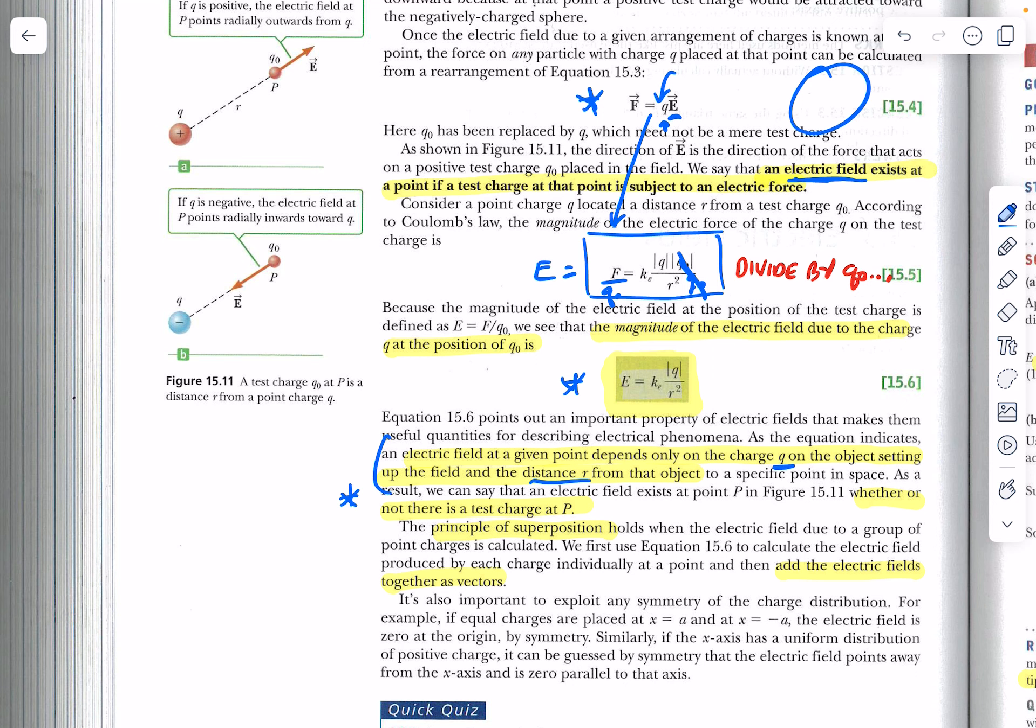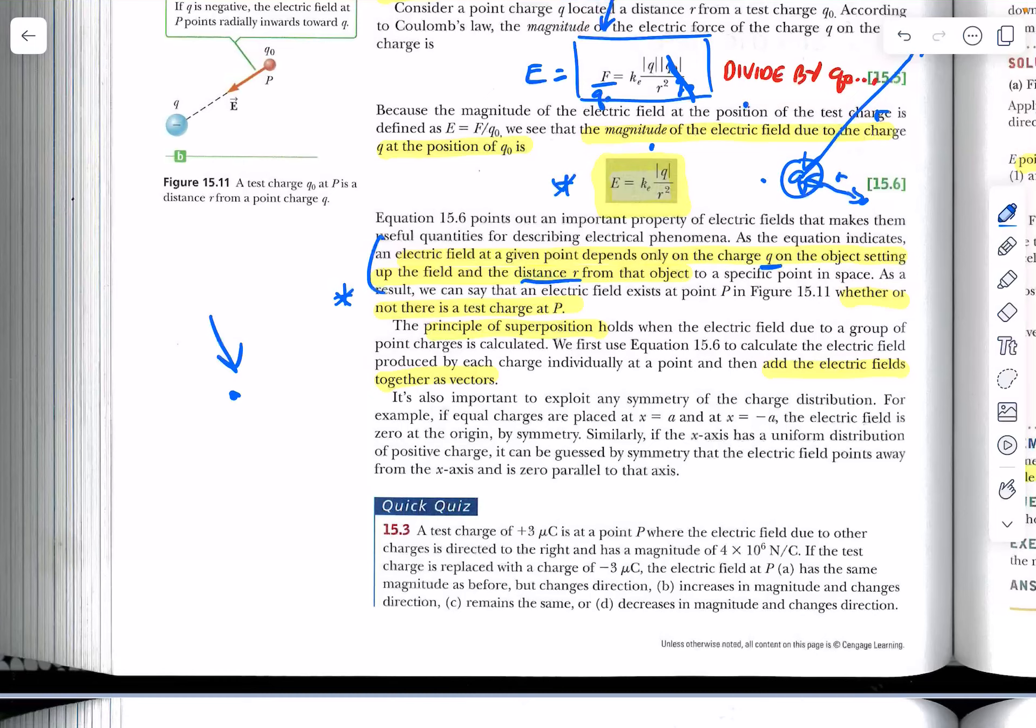So we can sum that up here. An electric field at a given point depends only on the charge q on the object and on the distance r from the object to a specific point in space. So if I have an object that has some charge q, I can determine the strength of the electric field there and there and over there and way out there and way up there and way over there, all over the place. All I need to know is the magnitude of q and this distance from the center r, or this distance here, r. So we can say that as a result, an electric field exists at any point, whether or not there's a test charge at p. So even though we can't see the electrical field, even though we don't have a way to at the moment to directly measure it like with a test charge, we know that there has to be an electrical field there by deduction.